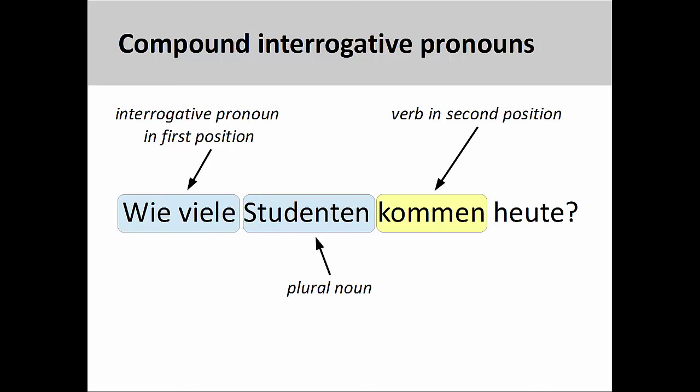The interrogative pronoun 'wie viele' (how many) is usually used in conjunction with a plural noun to ask about the number of that noun. For example, 'Wie viele Studenten kommen heute?' (How many students are coming today?). Again, the verb appears in the second position.